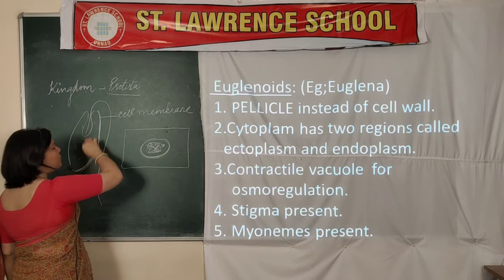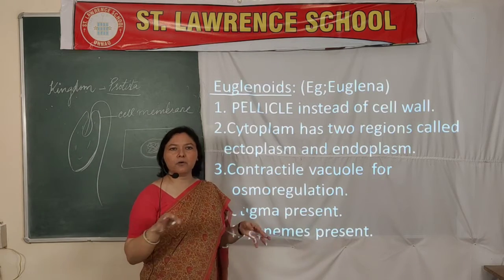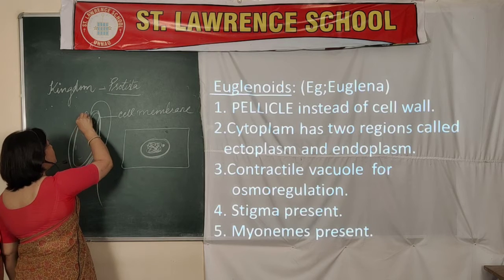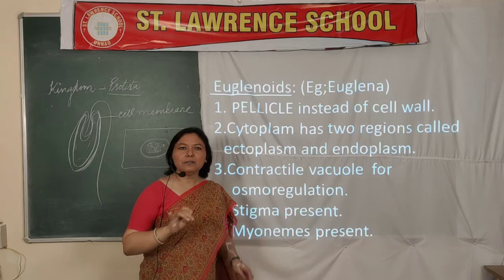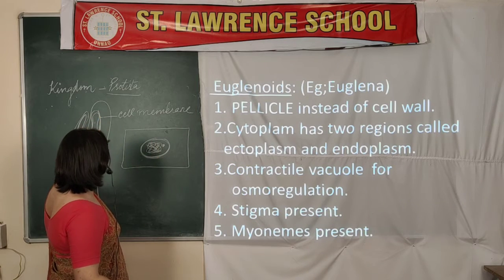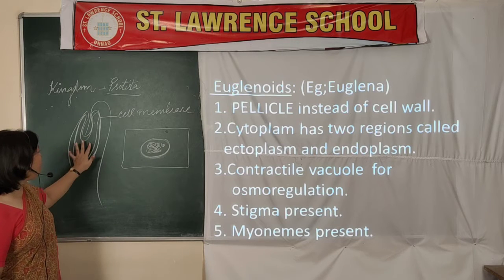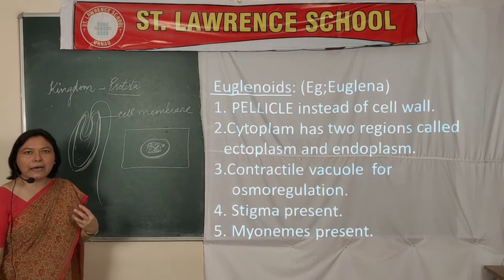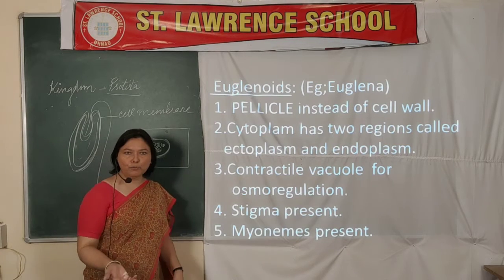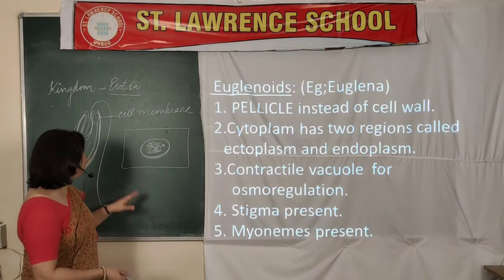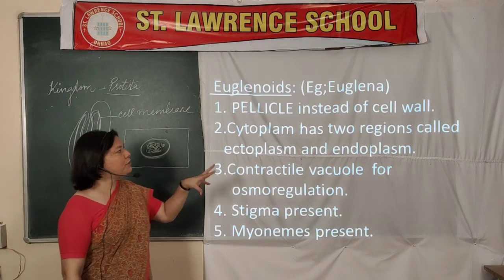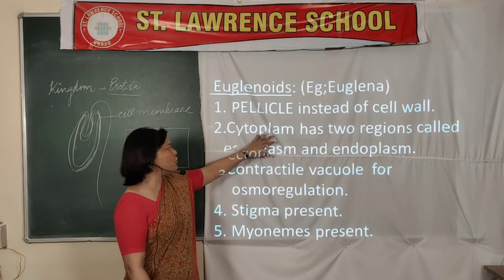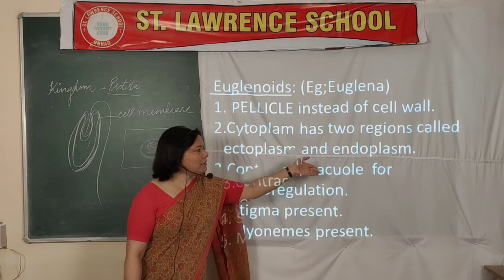The central part of the cell is the cytoplasm surrounding the nucleus. The cytoplasm has two regions: the outer dense region is the ectoplasm — more jelly-like and dense — while the inner region is more diluted and watery, providing more fluidity. This inner region is the endoplasm. So we have two regions: ectoplasm (outer) and endoplasm (innermost). 'Ecto' means outer, 'endo' means inner.